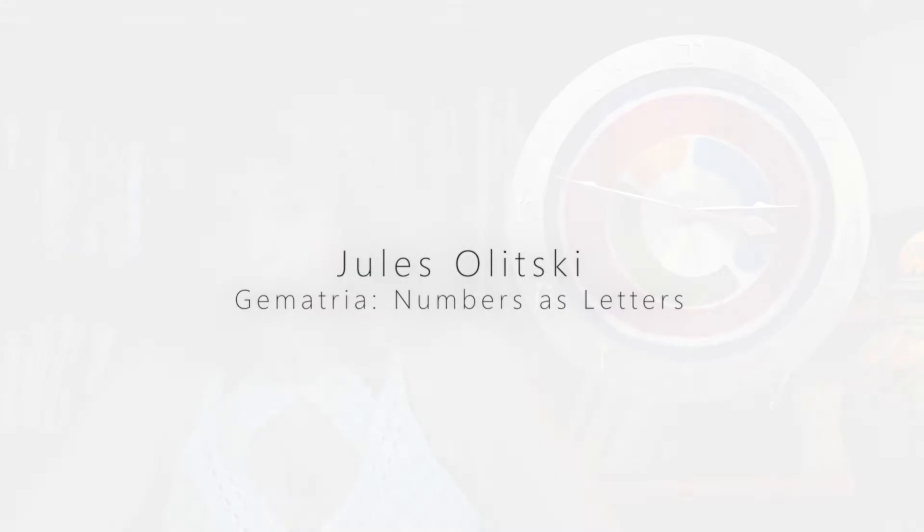Gematria — letters as numbers. In the Hebrew alphabet, each letter has a value. So you start: Aleph is 1, Bet is 2, Gimel is 3, and when you get to 10, you then go to 20, 40, 60, 80, 100, 200, 300, 400.